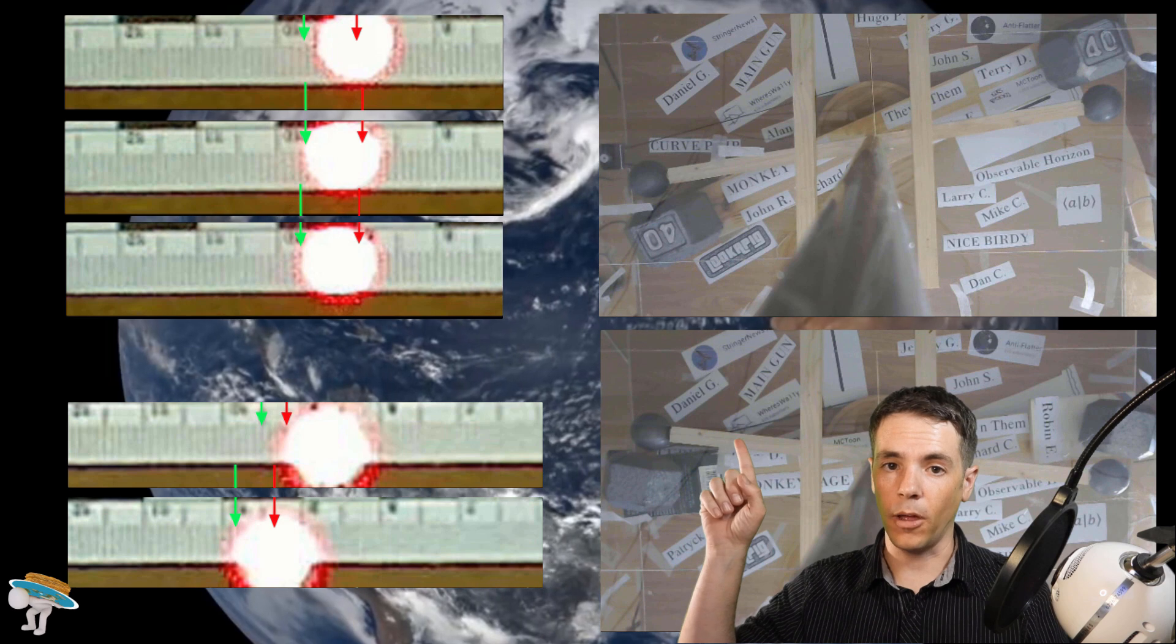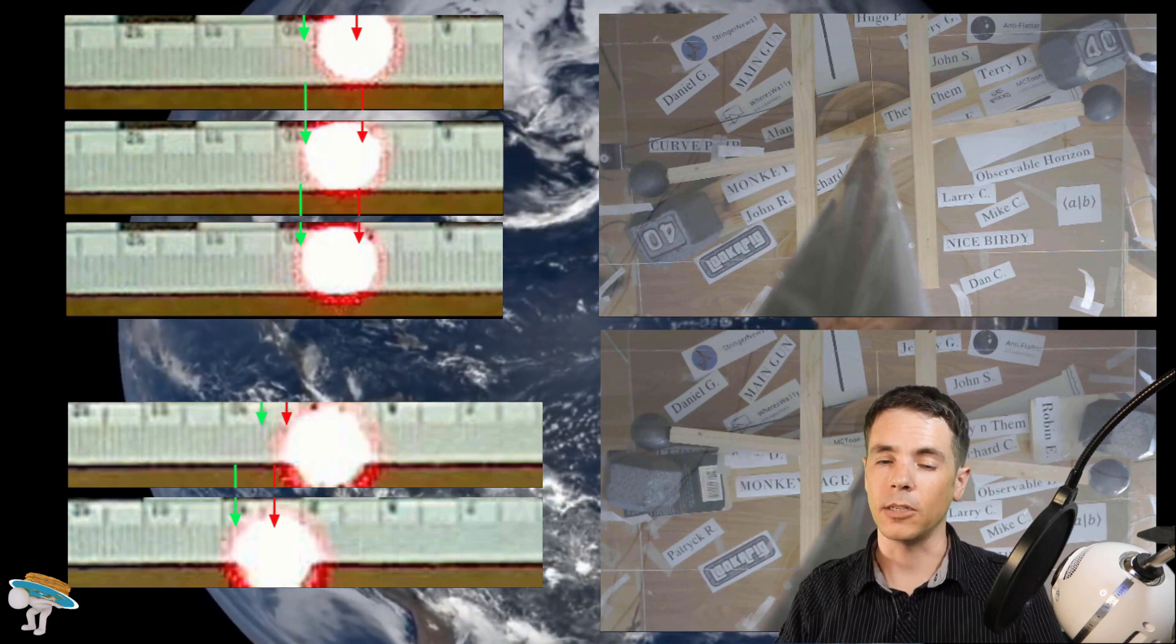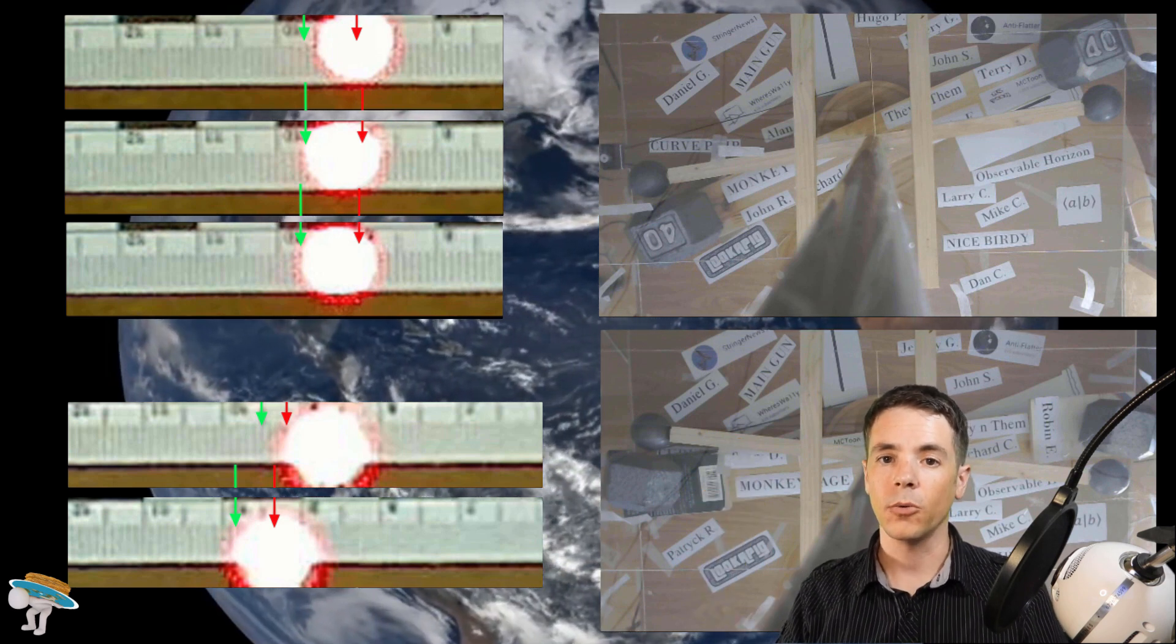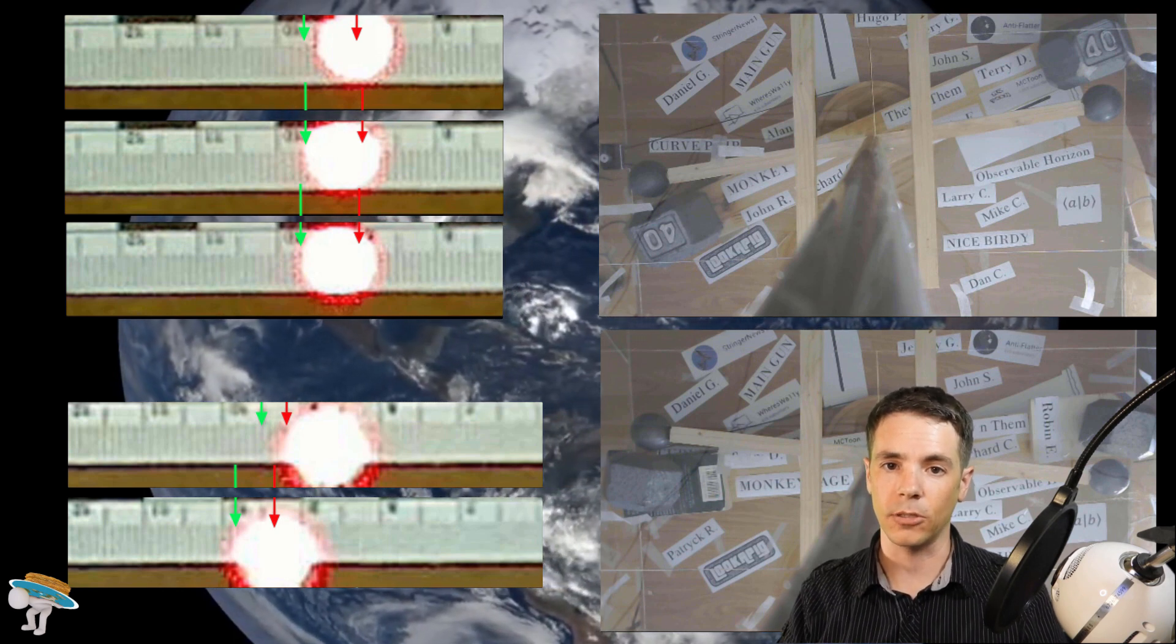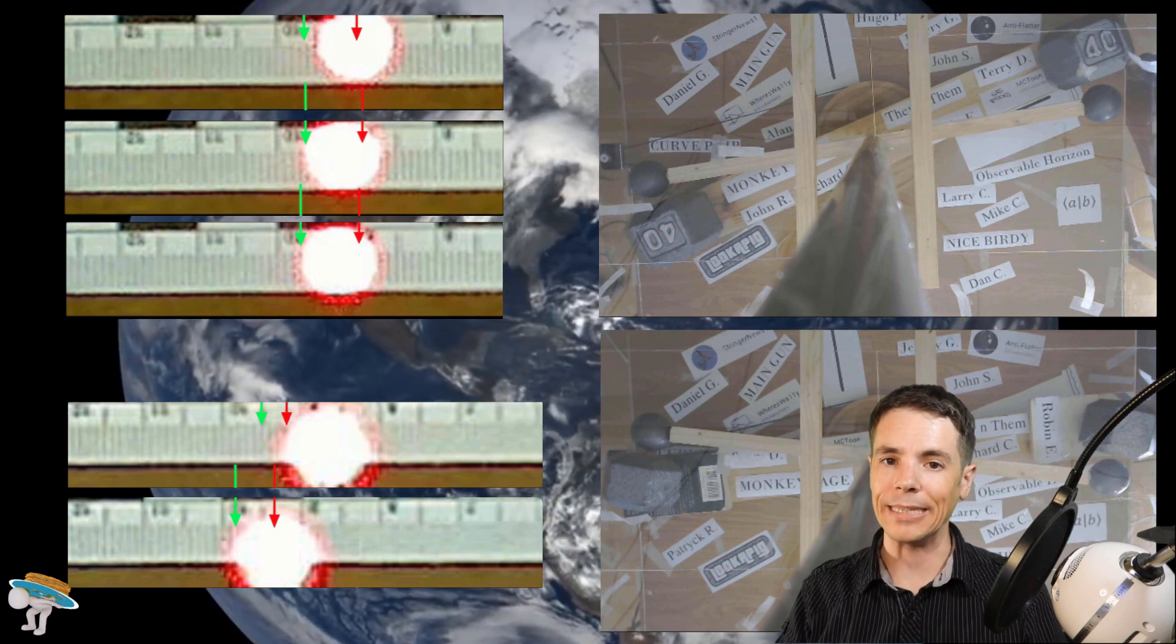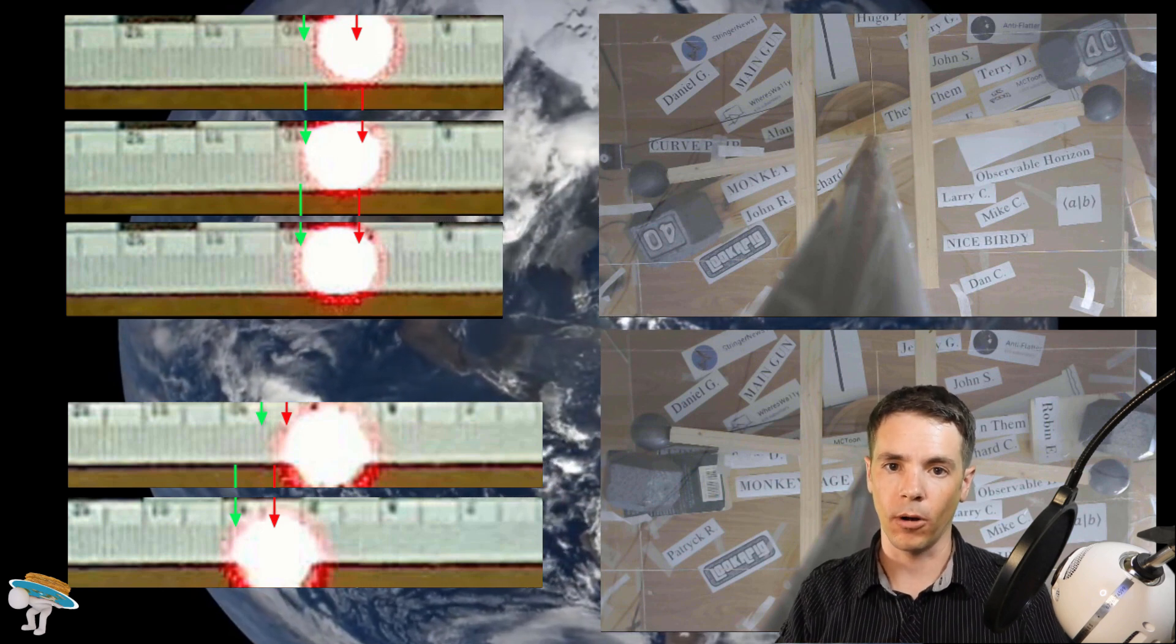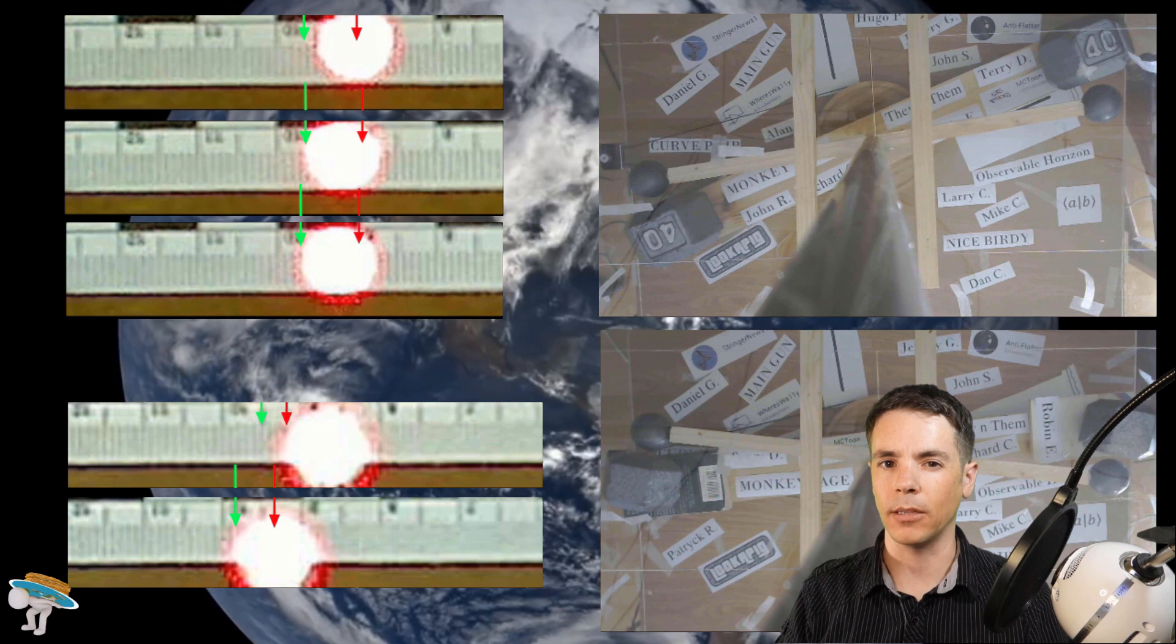You can see on the top run for the 40-pound weights that the smallest deviation observed was 6 millimeters. This particular run was the smallest of any of the deviations. Every other run was at least 6 millimeters or more. But you can see they're all generally the same size.